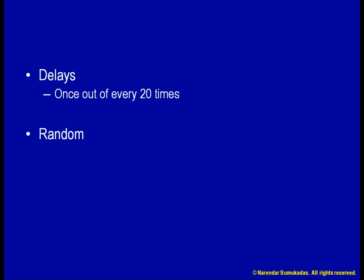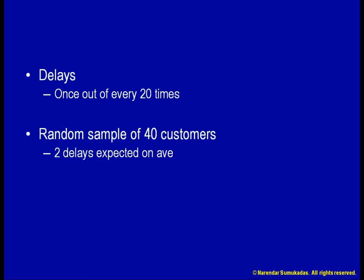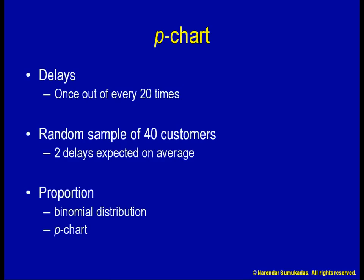Rather than watch the employee all the time, once again I am going to take a random sample of 40 customer orders throughout the day. In this sample, on average, I expect to find two delays. But I do also expect that there will be some range within which this number normally varies. In this case, the measurement I have is a proportion. This kind of data follows a binomial distribution, and the appropriate chart to plot is a p-chart.